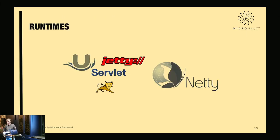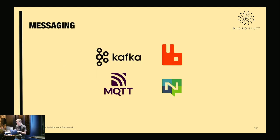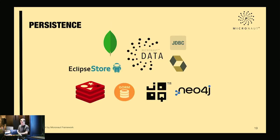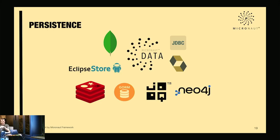It's really easy to generate a native executable of a Micronaut application using GraalVM. Supported runtimes include Netty (the default) and servlet runtimes like Tomcat or Jetty. For messaging there's great integration with Kafka, NATS, MQTT, and RabbitMQ. For database schema management, Flyway and Liquibase are supported. For persistence, the crown jewel is Micronaut Data, available as Micronaut Data JPA with Hibernate or Micronaut Data JDBC — a repository pattern generating implementations at compile time.